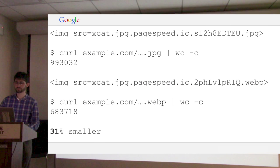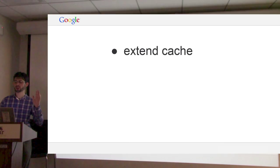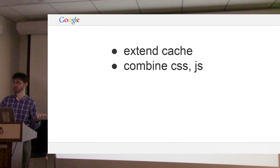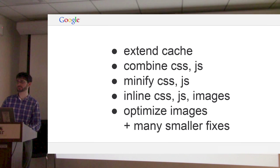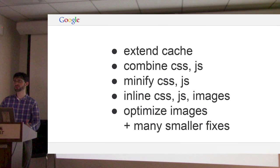These are the optimizations we can do completely automatically — just install Mod PageSpeed and you get them: extend cache, combine CSS and JavaScript files, minify the files, inline small external resources, optimize the images. All of this is automatic. There are also other smaller fixes — like if you have a meta tag at the top of the page, we can convert that to a header, which is good for old versions of IE. But most of them are not as powerful at speeding up sites as this list.